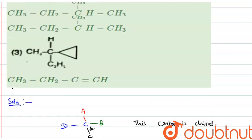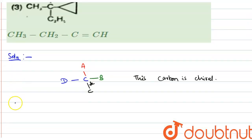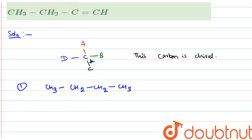Let's consider the first option, which is normal butane: CH3-CH2-CH2-CH3. There is no chiral carbon in this compound, so this compound is optically inactive.